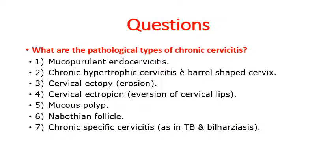This is a very common question: what are the pathological types of chronic cervicitis? The six types are: mucopurulent endocervicitis with the discharge coming; chronic hypertrophic cervicitis with barrel-shaped cervix; ectopy or erosion; cervical ectropion; Nabothian follicle; and chronic specific cervicitis, which is rare.